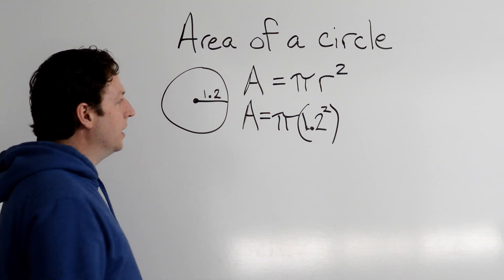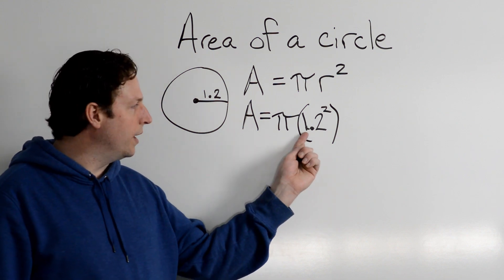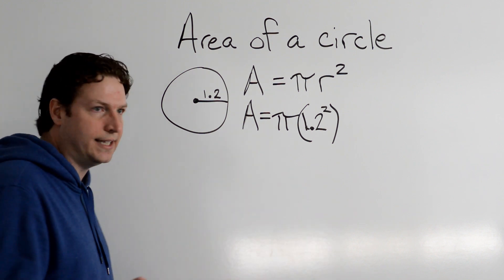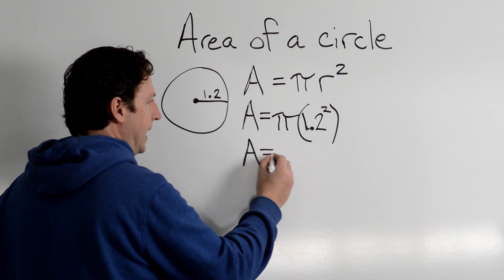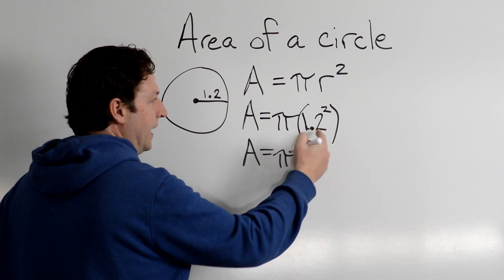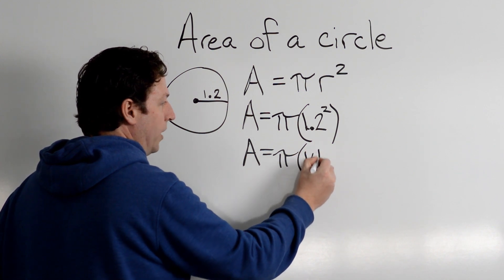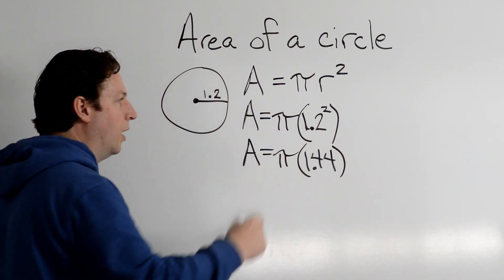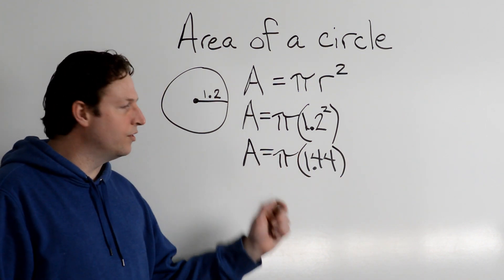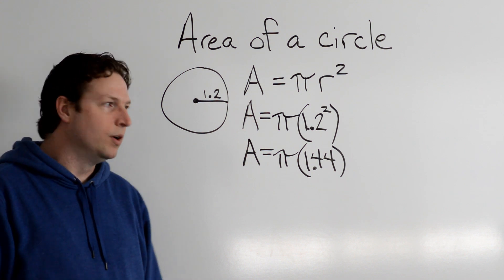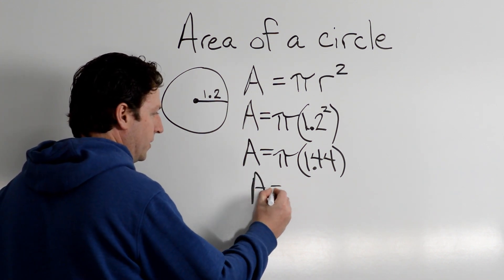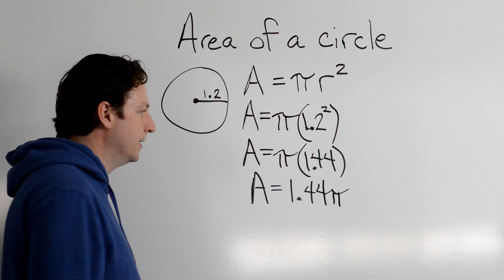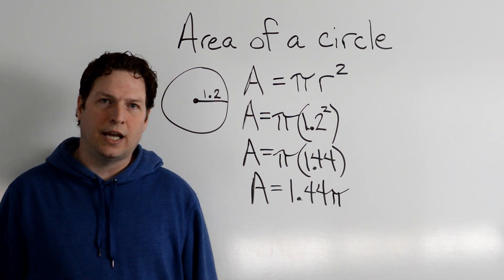And the cool thing about this is when you square 1.2, it's actually like multiplying 12 times 12, just with a decimal. So I'm going to rewrite it as A equals pi, and then 12 times 12 is 144, except I have a decimal. So 1.2 times 1.2 is 1.44. Now one more step: A equals 1.44 times pi, and if you want to plug it in your calculator, go ahead.